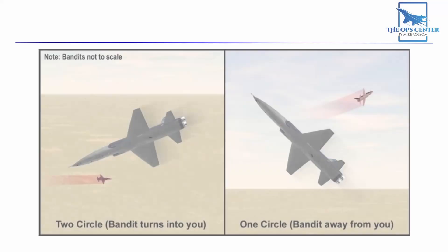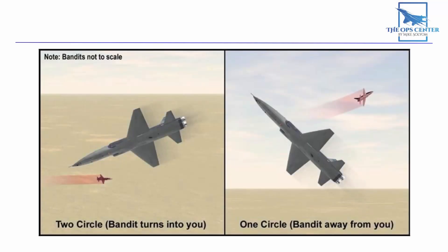Now let's do a quick recap. The direction of the fight is determined by the last aircraft to turn. When the Bandit turns towards you, you end up in a two-circle pattern.